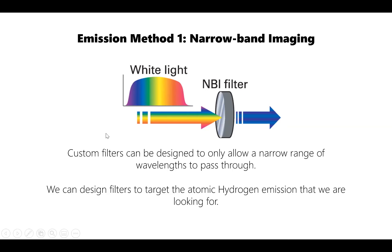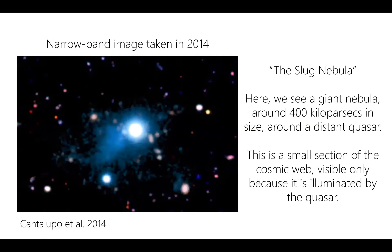This method is good because it's efficient — just a filter and a camera, simple optics, minimal light loss. Custom filters can be designed to target atomic hydrogen emission. This image shows one of the first large detections of a portion of the cosmic web through narrowband imaging — from Cantalupo et al. 2014, using the VLT at the European Southern Observatory — studying a nebula called the Slug Nebula. The two bright sources in this image are quasars that illuminate the gas, which would otherwise be too faint to detect.